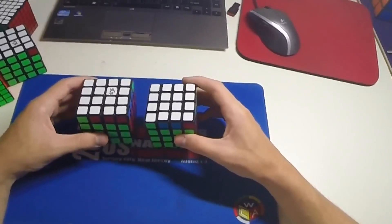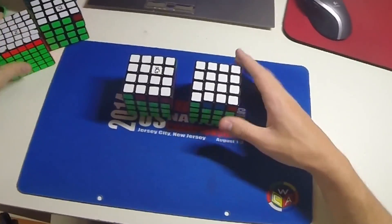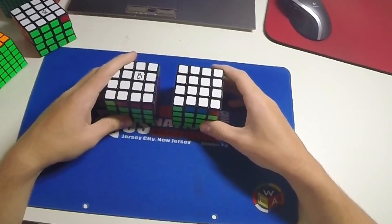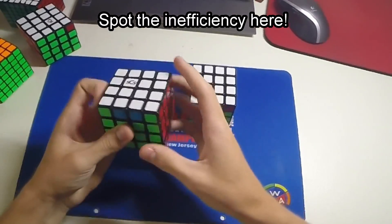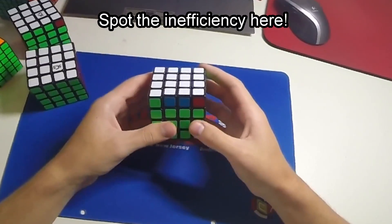So if we do PLL parity on both cubes, we're going to get a J perm on both, but I prefer to do this J perm than the other one. So how we would handle that is, if we have this case, we do the J perm first and then do PLL parity. In this case, we do the PLL parity first.